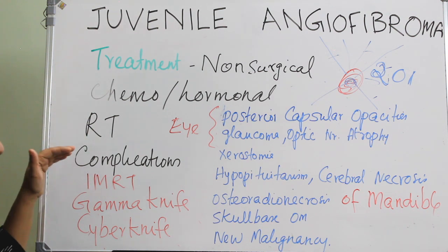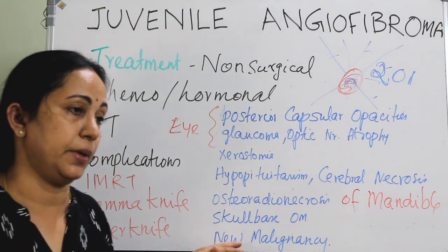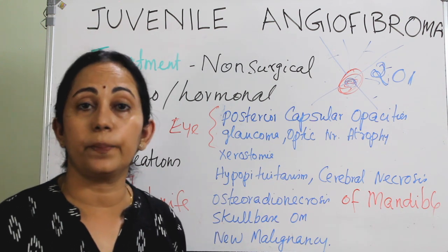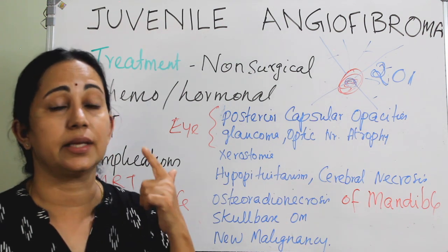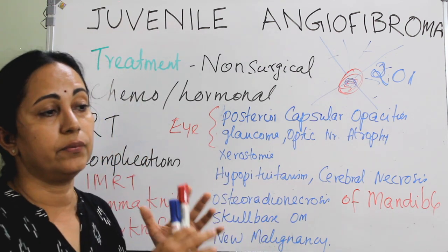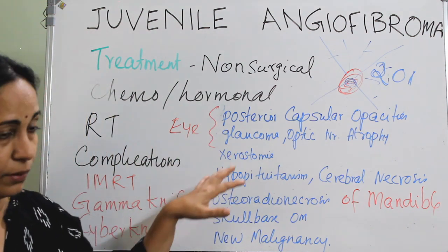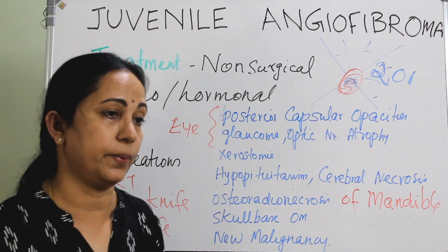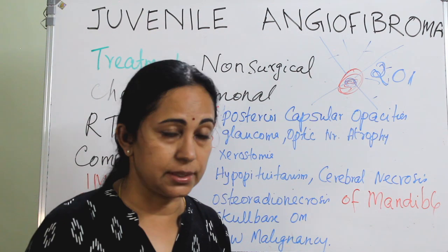In RT, you have to know the conventional dose, the complications, and what is IMRT, gamma knife, and cyber knife. These treatment modalities are now covered. Surgical approaches — both open and endoscopic — and non-surgical adjuvant therapy including embolization, hormonal or chemotherapy, and radiation have been discussed. A combination of all these can also be used, especially giving embolization preoperatively for larger tumors followed by surgery.